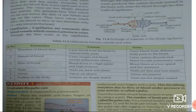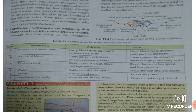Third, the flow of blood: in arteries, blood flows at high speed and with high pressure; in veins, blood flows with low speed and low pressure. Fourth, the walls: walls of arteries are thick and elastic, while walls of veins are thin and less elastic. Valves are absent in arteries while valves are present in veins. Fifth, position in the body: arteries are deep-seated while veins are not deeply seated. These are all the differences between arteries and veins.